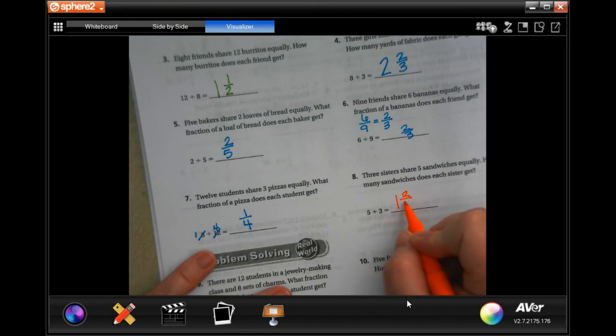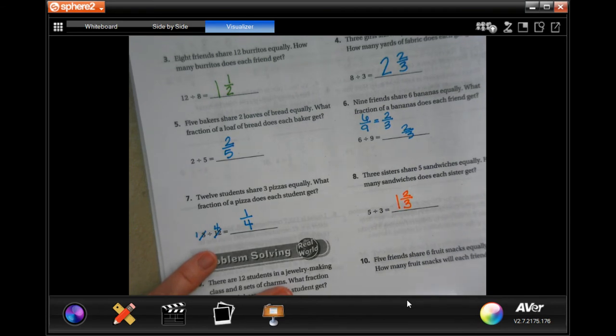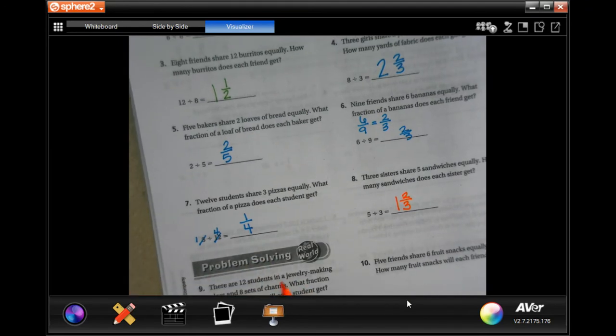And my denominator would be three. Not that bad, I swear. There are twelve students in a jewelry making class and eight sets of charms. What fraction of the set of charms will each student get?